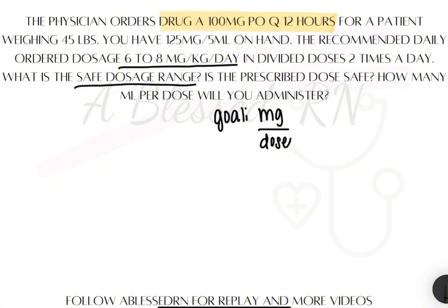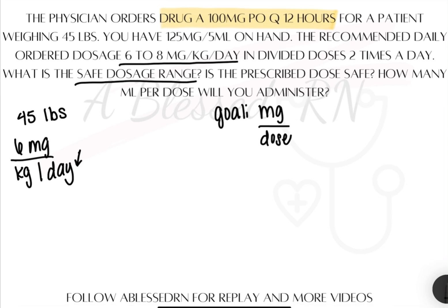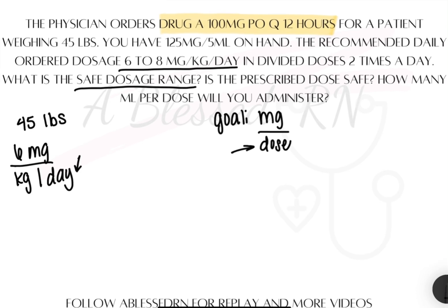So what are our puzzle pieces? We'll need a couple of things. First is the patient's weight, which is 45 pounds, and then we'll be doing two equations. We'll take the lower limit first, which is 6 milligrams per kilogram per day. Since we need the amount per dose and we have per day in the dosage range, we need a puzzle piece to cross out that day. It tells us the dose is given in two divided doses a day, so one day has two doses in it.